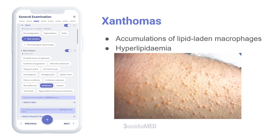Xanthomas are characterized by accumulations of lipid-laden macrophages. Xanthomas can develop in the setting of altered systemic lipid metabolism or as a result of local cell dysfunction. They are seen in hyperlipidemia.